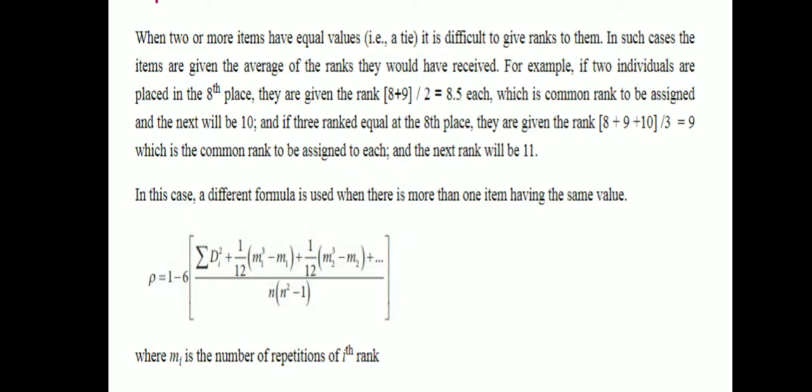For example, if two individuals are placed in the eighth position, they are given (8 plus 9) divided by 2, equal to 8.5 each. If one rank repeats m1 times, another rank repeats m2 times, and a third rank repeats m3 times and so on, then the correction factor is defined.